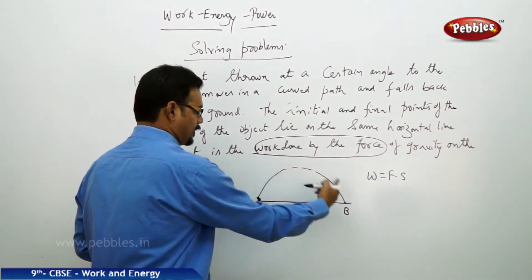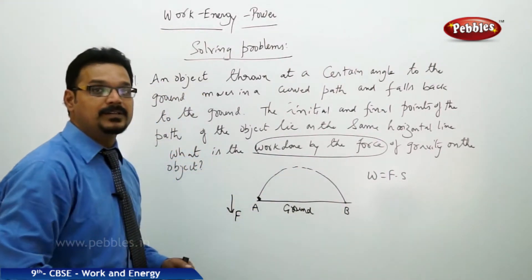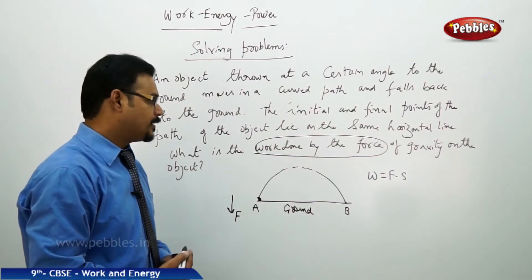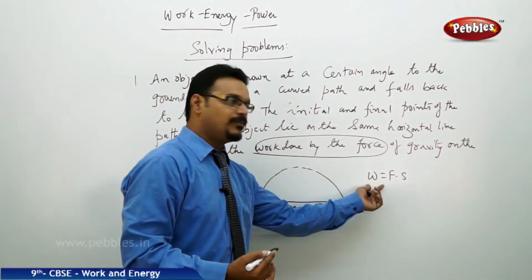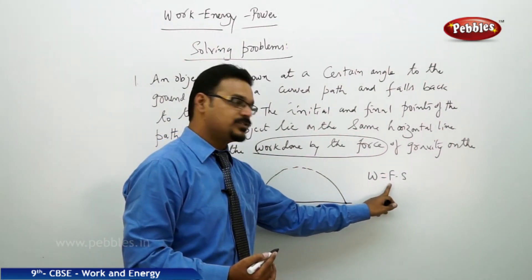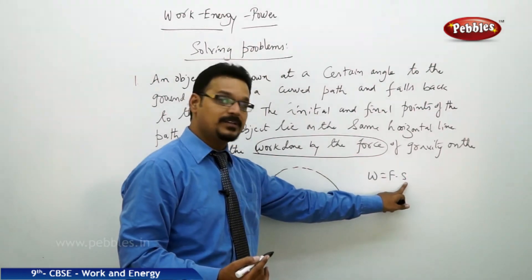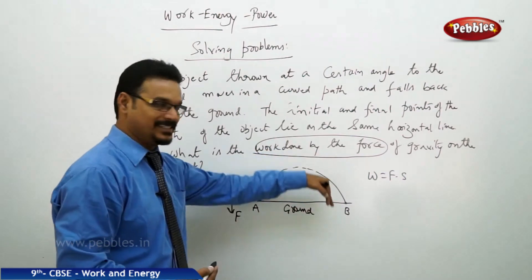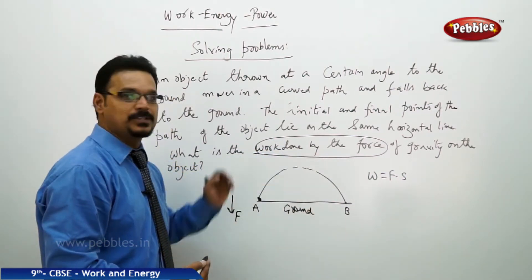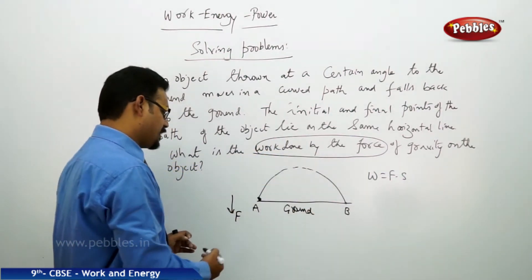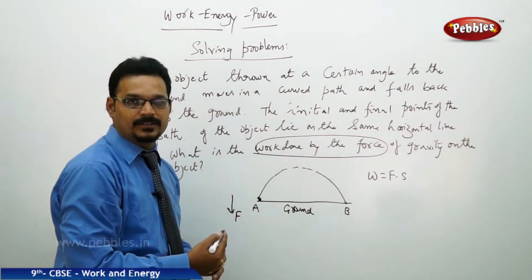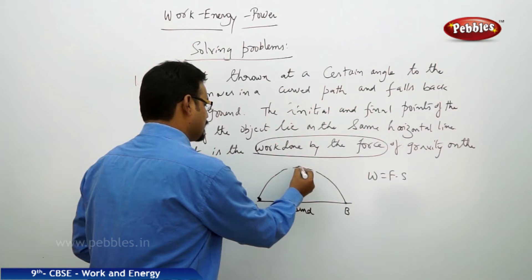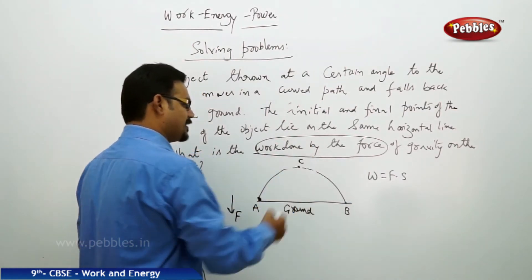The total path from A to B is the distance traveled, but in the work done formula, force is a vector and displacement is also a vector quantity. So you shouldn't take the distance; instead, take the displacement. Displacement is the shortest distance between the starting and ending point.